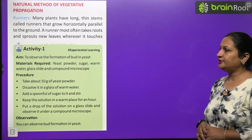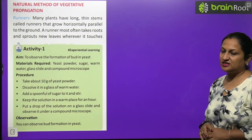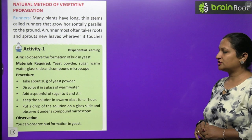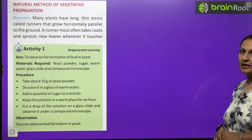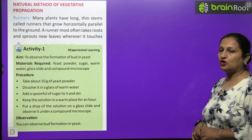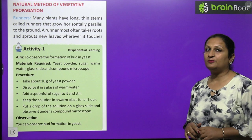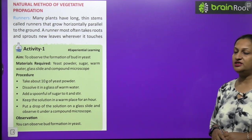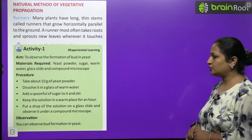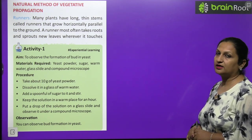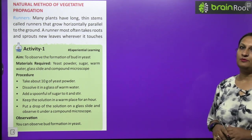Now have a look on activity children. To observe the formation of bud in yeast. For this you need yeast powder, sugar, warm water, glass slide and compound microscope. Take about 10 grams of yeast powder and dissolve it in a glass of warm water. Add some sugar because sugar serves as food for the yeast. Keep the solution in a warm place for an hour. Put a drop of solution on a glass slide and observe it under a compound microscope. You can easily see the bud formation on the yeast cell.